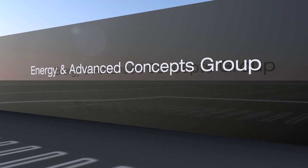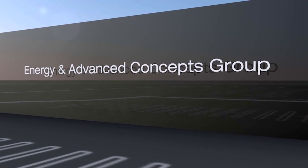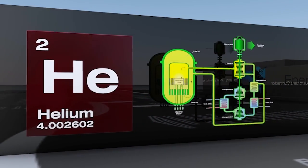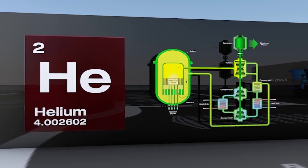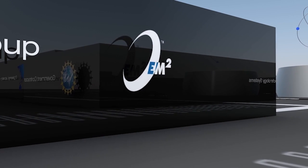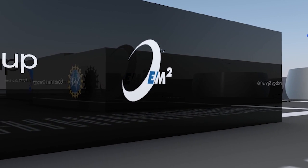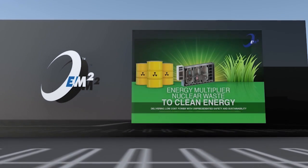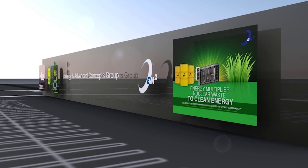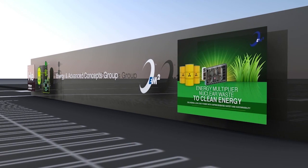GA's Energy and Advanced Concepts Group is a world leader in research and development of advanced energy products and systems, including helium-cooled nuclear reactors for electric power generation. It is developing the Energy Multiplier Module, or EM-squared, a small modular nuclear reactor that addresses one of the most challenging problems associated with nuclear energy: what to do with nuclear waste.